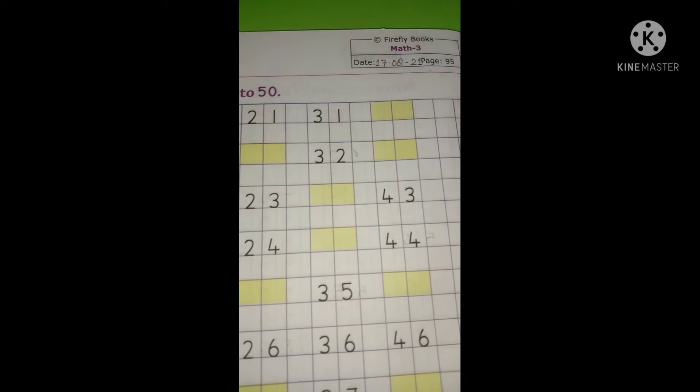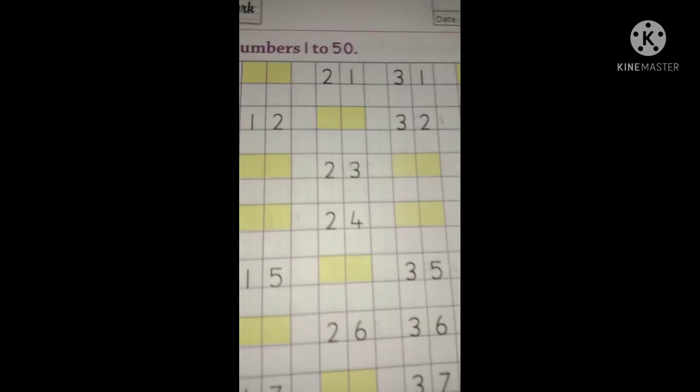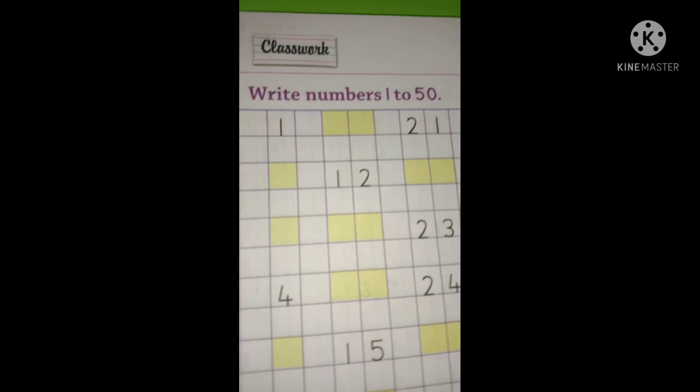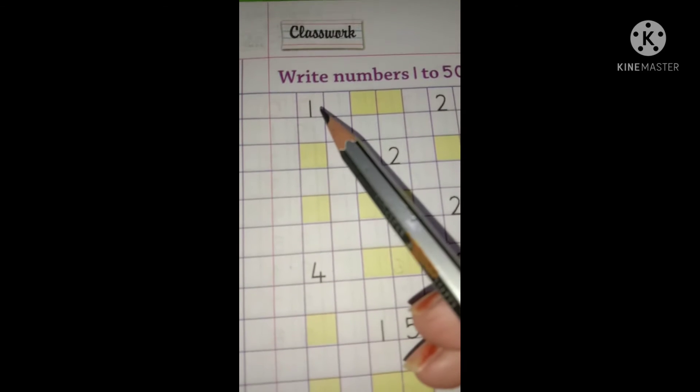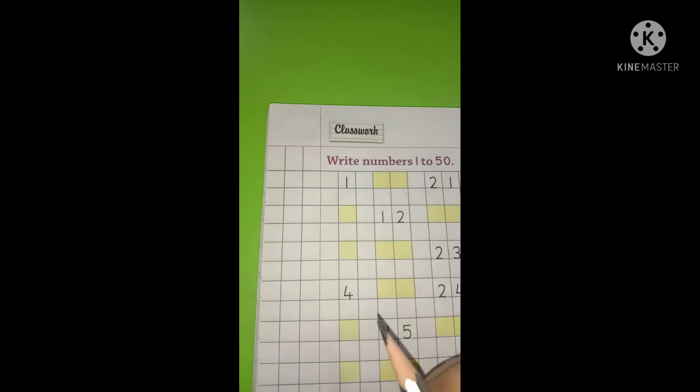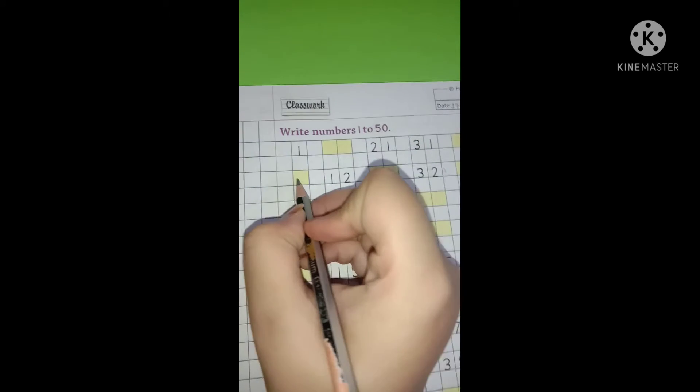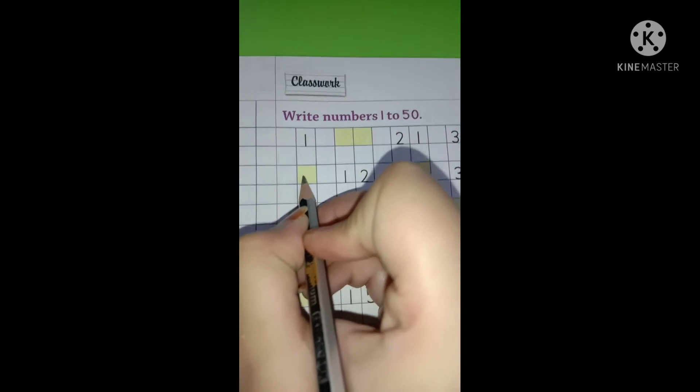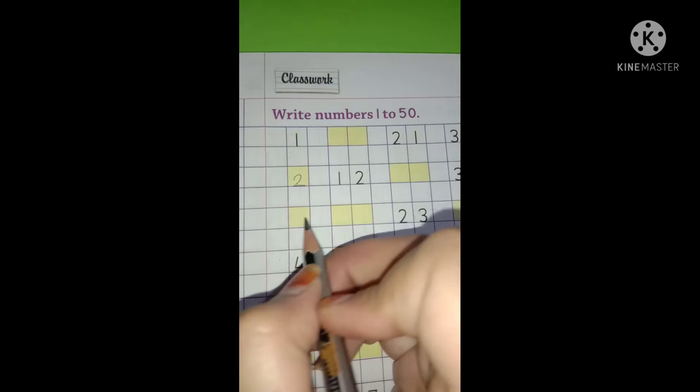All of you open page number 95 and start doing. Here it is written number 1, so now tell me what comes after 1? It's number 2, so we will write 2 here. Now what comes after 2?